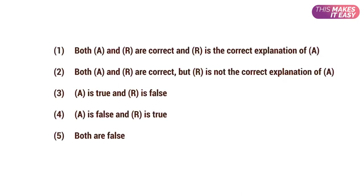Assertion-reason type questions have five different options. The first two options say that both assertion and reason are true — in option one, reason is the correct explanation of the assertion, and in option two, reason is not the correct explanation. The third and fourth options say either A or R is true and the other is false. The fifth option says both are false.